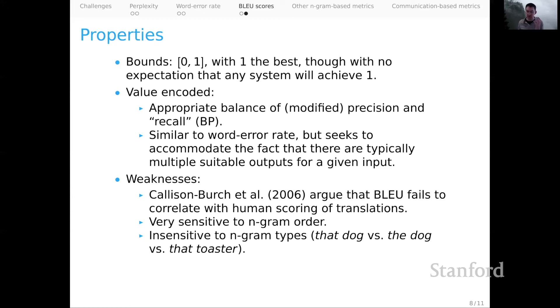Those will likely have very similar BLEU scores, but 'that dog' and 'the dog' are just inherently much more similar than 'that dog' and 'that toaster' in virtue of the fact that 'that' and 'the,' it's just a difference at the level of functional vocabulary versus 'dog' and 'toaster' is a really contentful change.